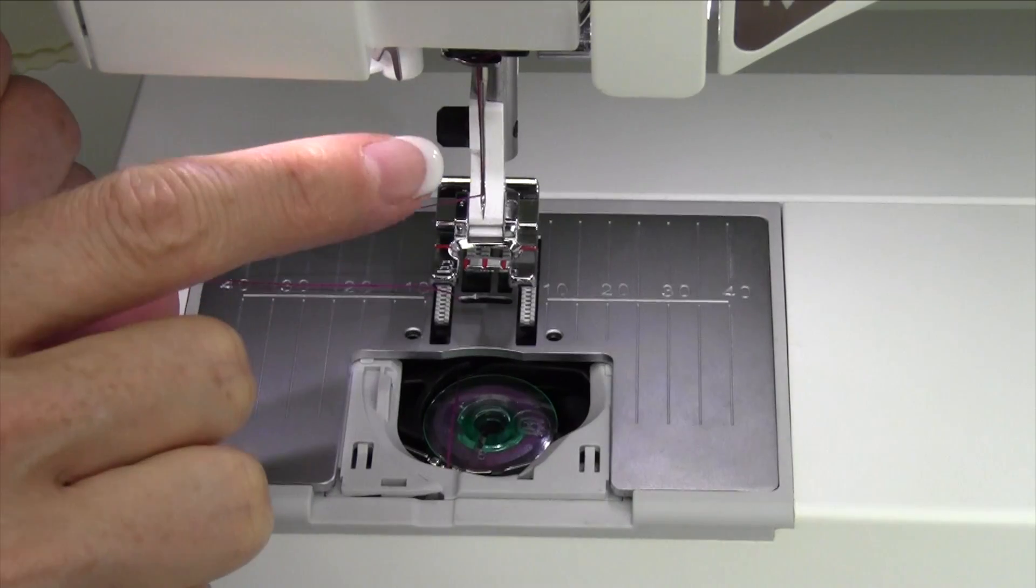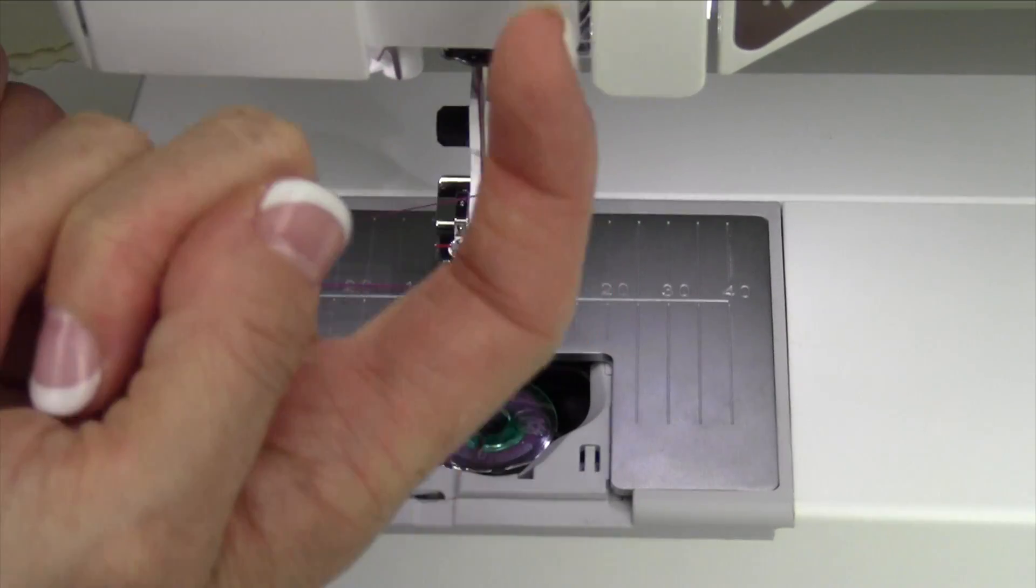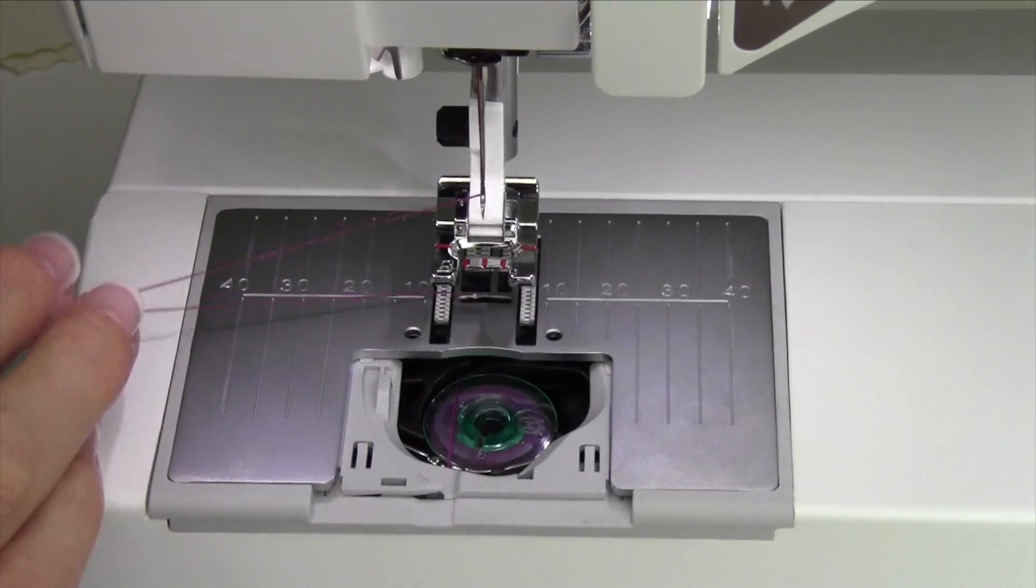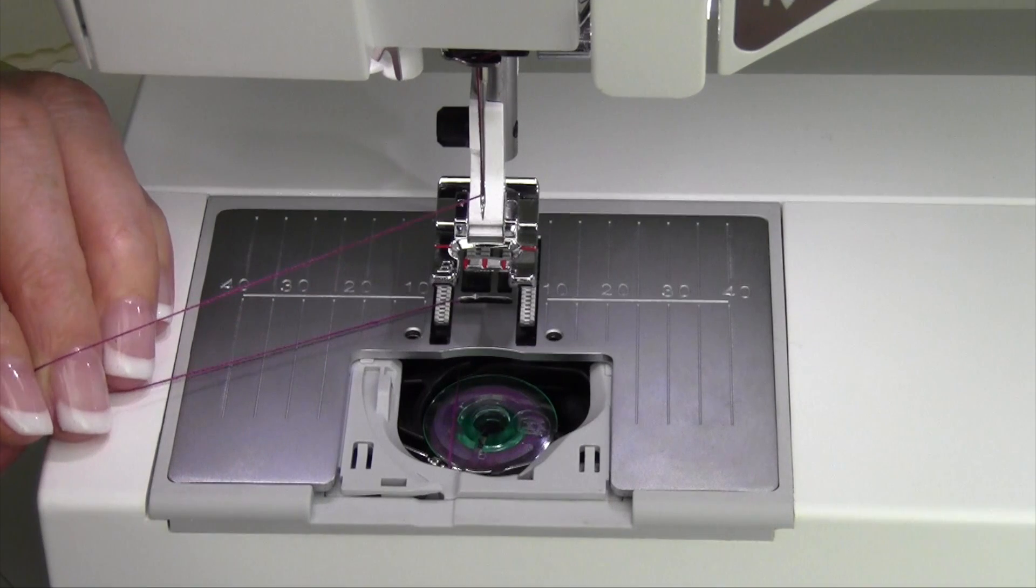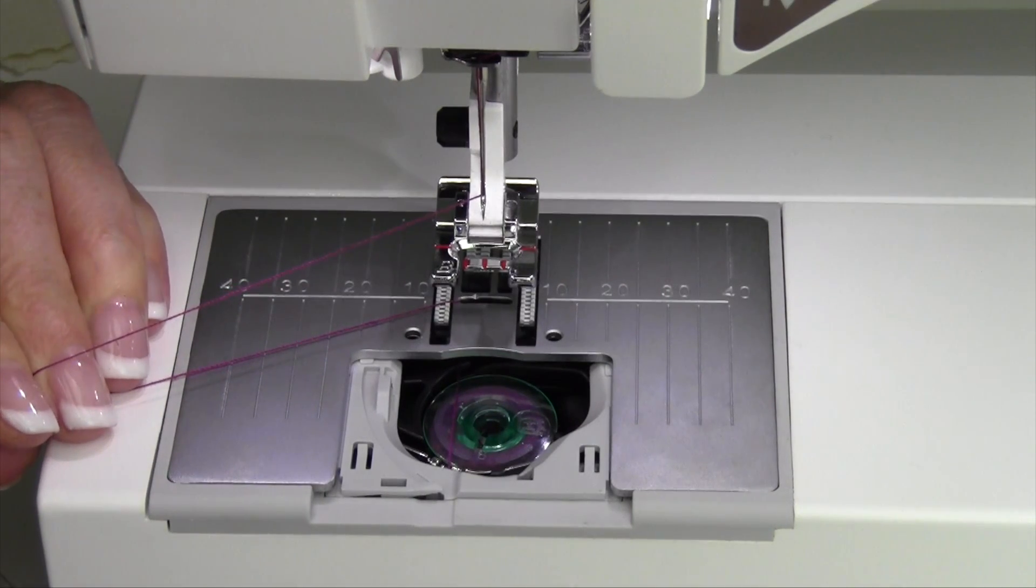That's the job of the take-up lever, the little guy that goes up and down at the very top of your machine. It is pretty cool how a stitch is made and at such high speeds that our machines run these days.